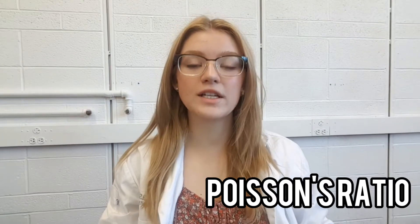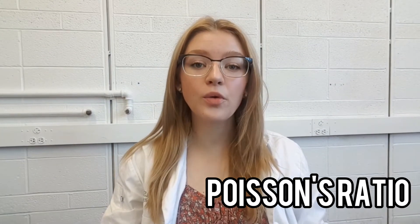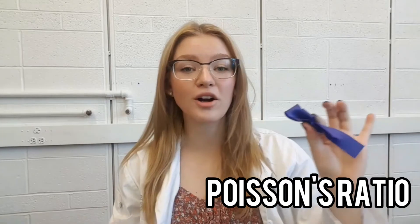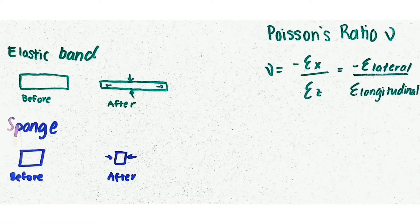Hi everyone, today we're going to be exploring Poisson's ratio with the use of a sponge and part of a rubber glove. Poisson's ratio measures the Poisson effect that describes the expansion or contraction of materials in the direction that is perpendicular to the direction of loading. It's an important property that helps us understand how materials will deform under loading.